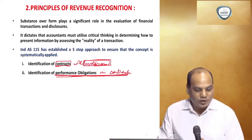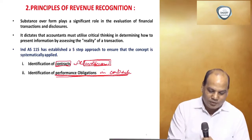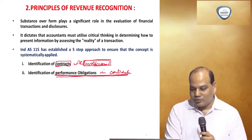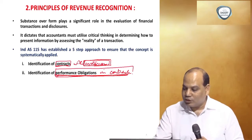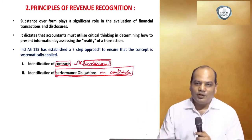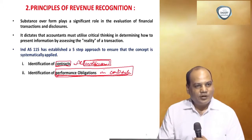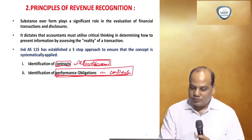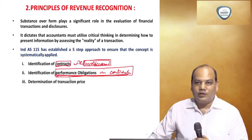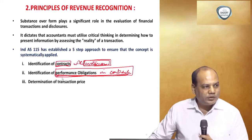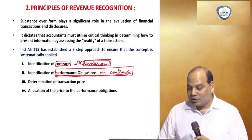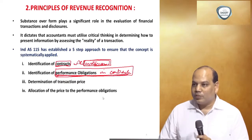For a car dealer, the performance obligation is to sell the car and provide free services. In the earlier example of a company selling heavy equipment, the obligation was to sell the equipment and provide services for five years. Revenue will be allocated according to the performance obligations. Step three is to determine the transaction price.